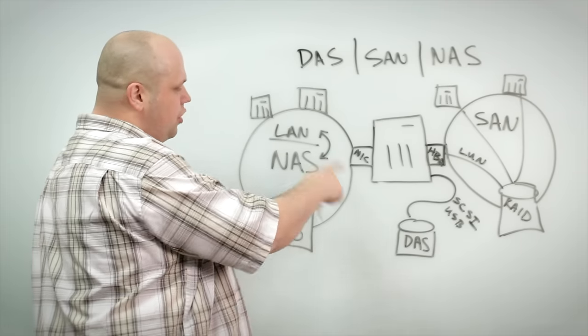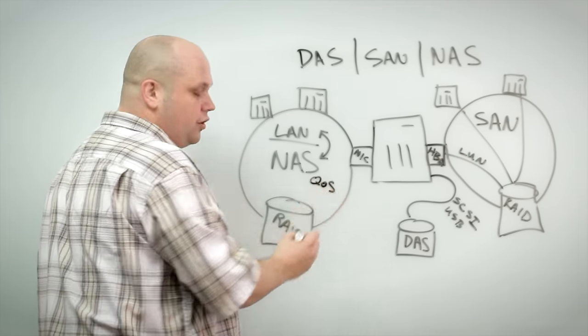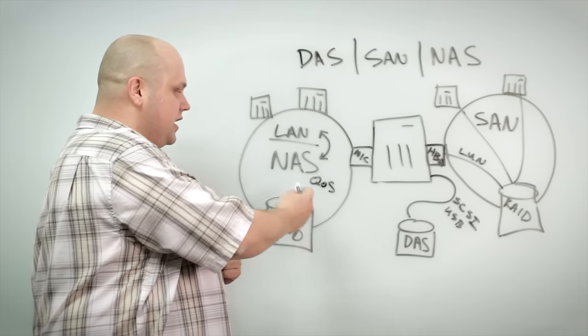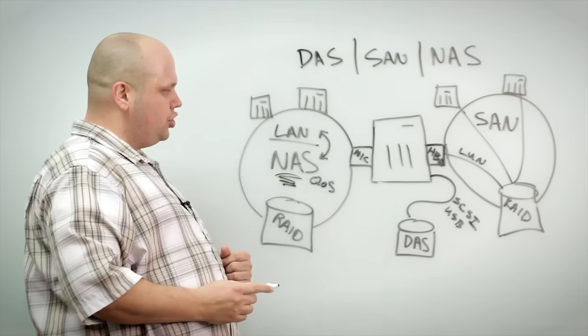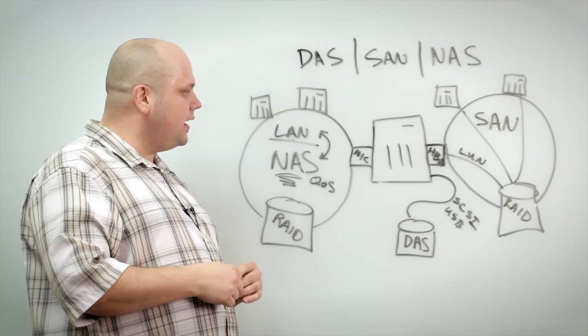And so prioritizing traffic to allow for that network attached storage then becomes a very major concern. And so if you do go with a NAS solution, you want to make sure that your underlying quality of service infrastructure is appropriately configured to give priority to your storage traffic over regular LAN traffic that might be internet browsing or something like that.